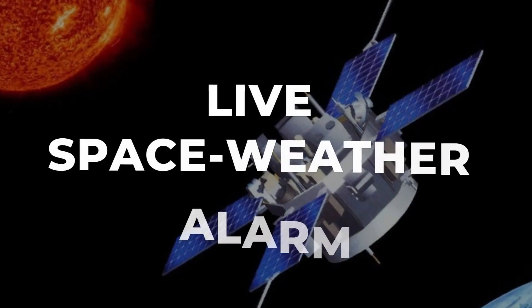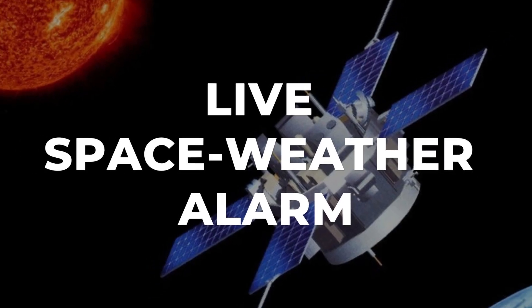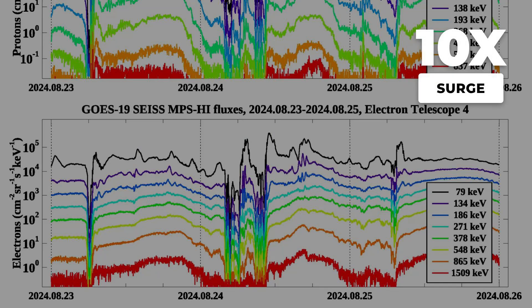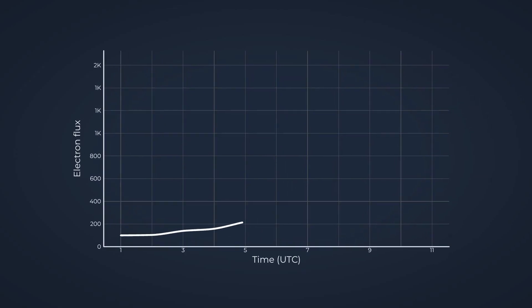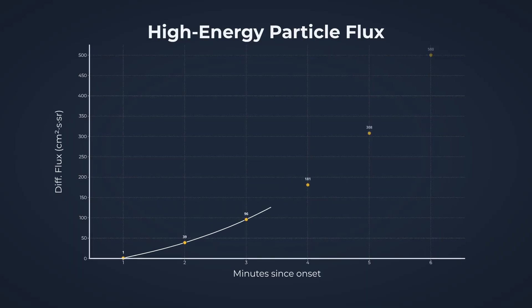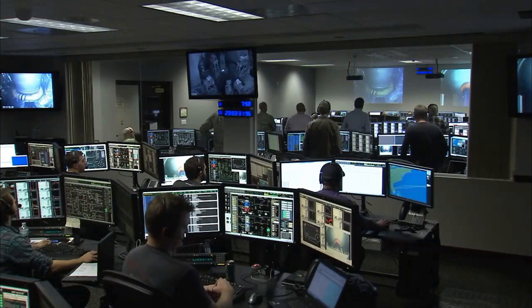At 2000 hours UTC on October 21, the ACE spacecraft at L1 began transmitting data that caught the attention of every space weather desk on the planet. Electron flux levels, usually steady, surged by more than a factor of 10 in less than 2 hours. The charts didn't just rise, they spiked, climbing from background values to readings consistent with a strong solar energetic particle event. This wasn't a slow build, it was a wall of high-energy electrons arriving ahead of the expected proton storm.